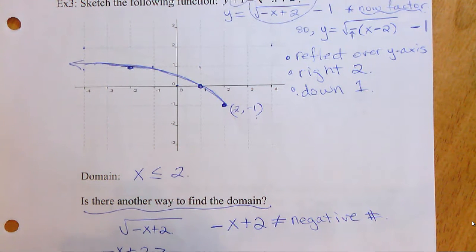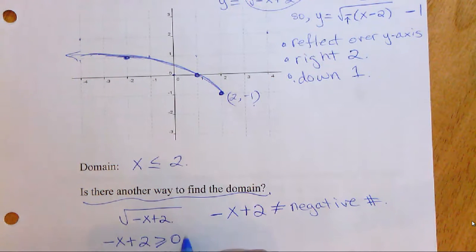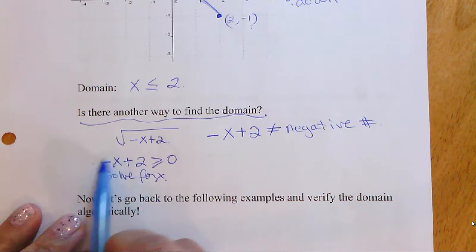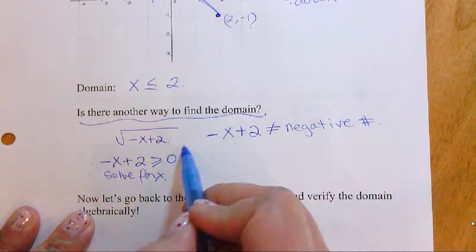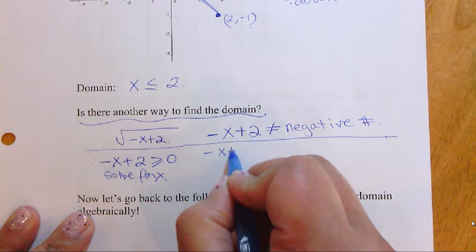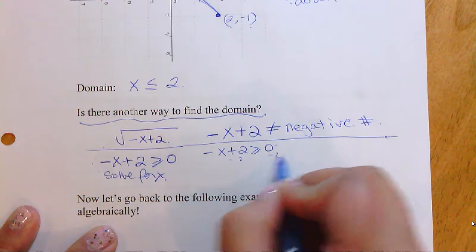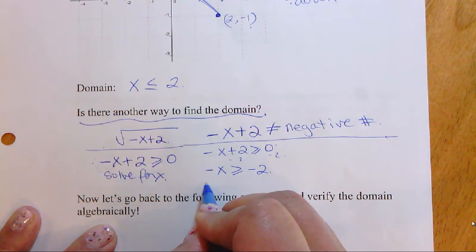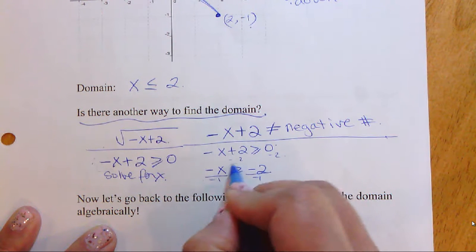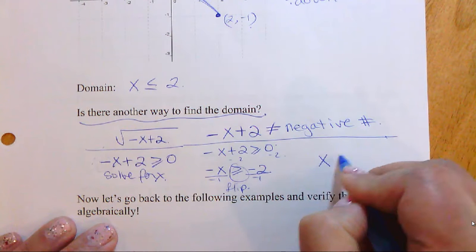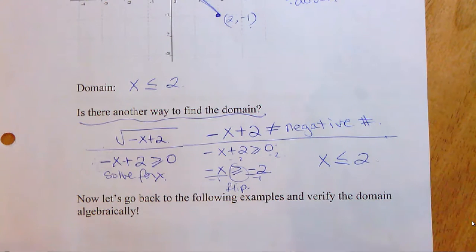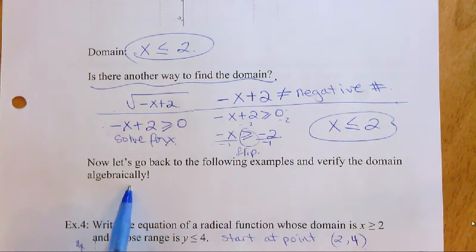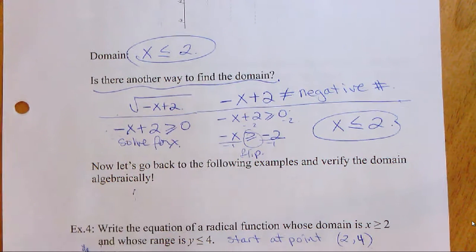There's another way to find the domain algebraically without looking at the graph. Look at what's under the square root — it cannot equal a negative number. So: negative x plus 2 must be greater than or equal to zero. Subtract 2: negative x is greater than or equal to negative 2. Divide by negative 1 and flip the inequality sign, giving x less than or equal to 2 — exactly matching the graph.